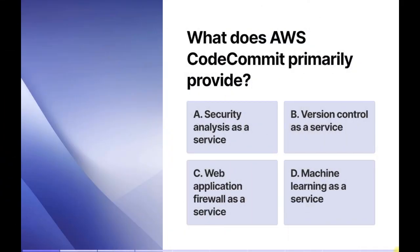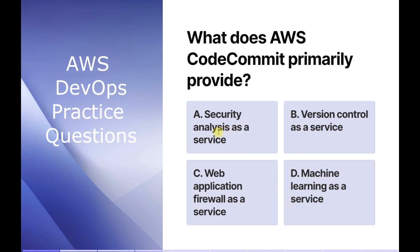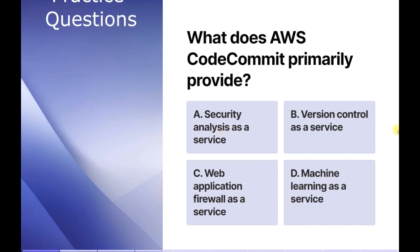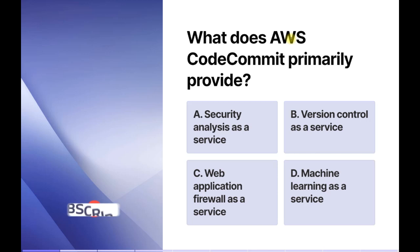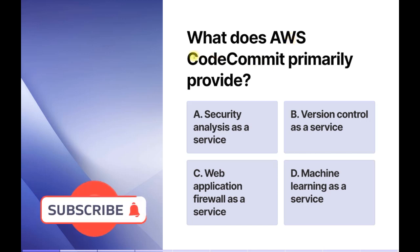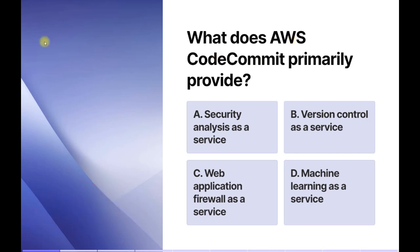In this question they are asking: what does AWS CodeCommit primarily provide? The options are: security analysis as a service, version control as a service, web application firewall as a service, and machine learning as a service. AWS CodeCommit is a version control system which allows us to store and version our code. So the answer will be version control as a service.